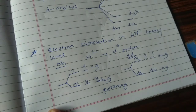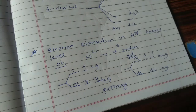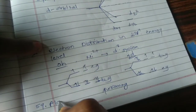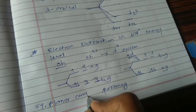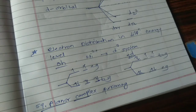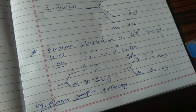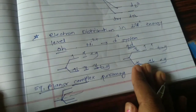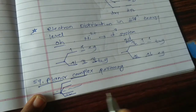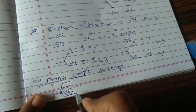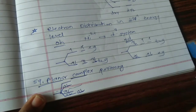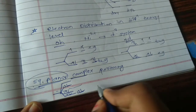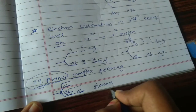If we consider the square planar complexes, the electrons are distributed in the following manner: all the electrons are distributed in the lower energy levels and are paired. Therefore, in a square planar type of complex, the molecule shows diamagnetic nature.